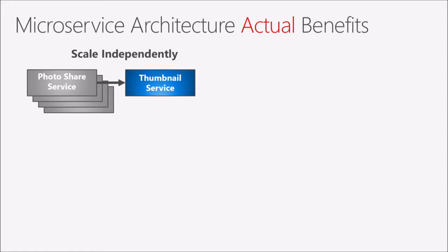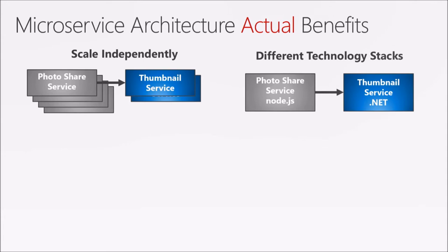For example, in a photo-sharing application, requests come in for people to view or upload photos. When photos are uploaded, we need to create thumbnail images, handled by a separate thumbnailing service. At certain times of year, if people are just viewing photos, we don't need many instances of the thumbnail service. But during holiday season when people take more photos, we can scale that up, then scale it back down afterward. By making these two separate microservices, we can scale them independently.